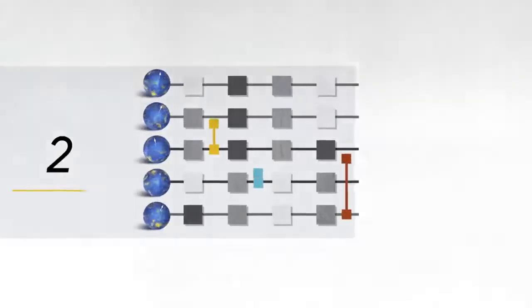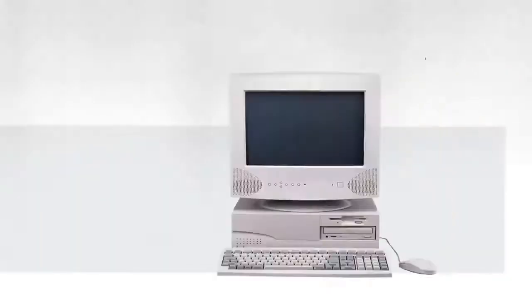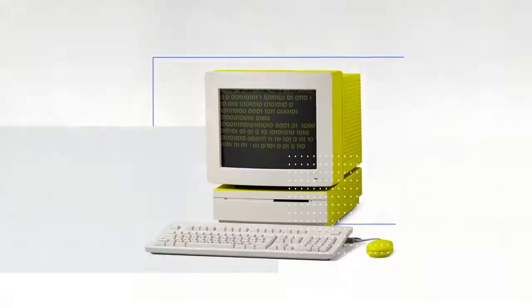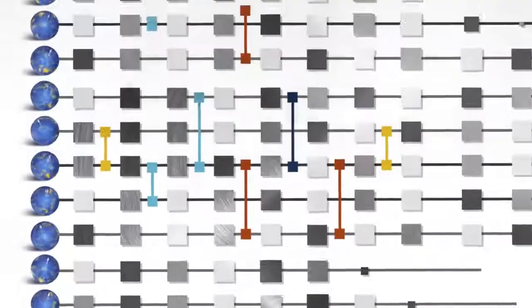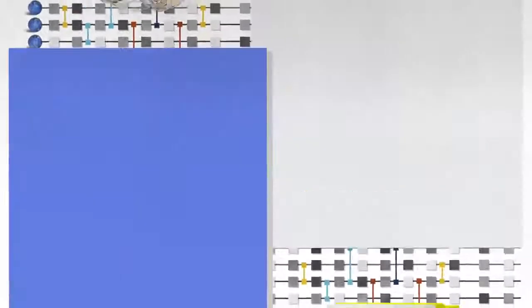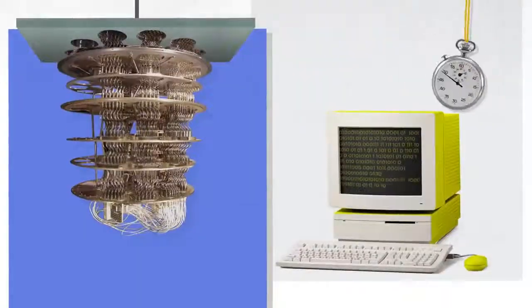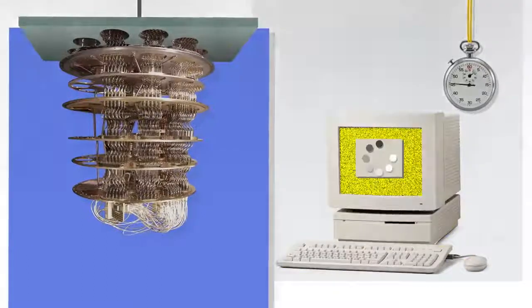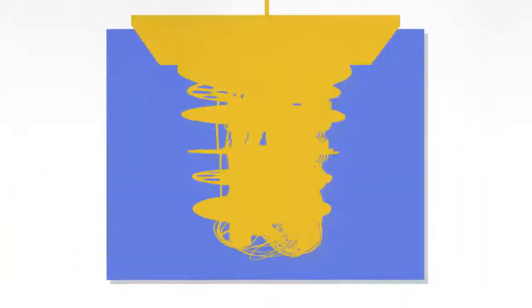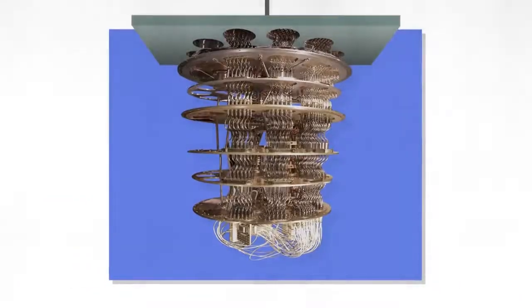To actually demonstrate quantum supremacy we have three steps. First, pick a circuit. Second, run it on the quantum computer. Third, simulate what the quantum computer is doing on a classical computer. We gradually increase the complexity of that circuit, and at some point it becomes completely impossible for the classical computer to keep up. Then we say we've achieved quantum supremacy.